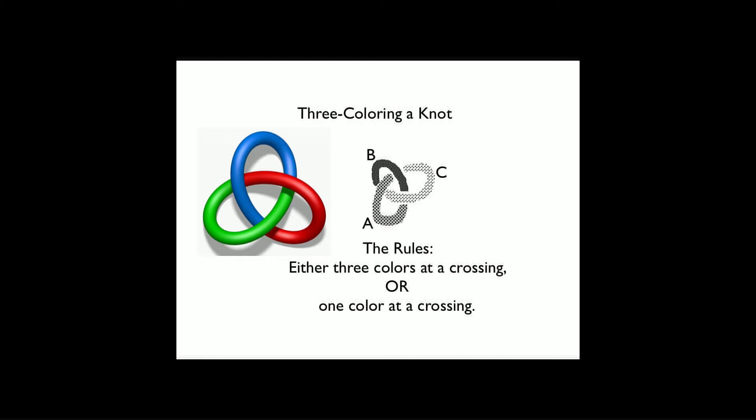A little theory: you can three-color a trefoil knot like this one you see. Some knots can be three-colored. The entire arc from under to under is colored with one color—in this case red, green, blue. Then you realize that if you move this knot around once you've colored it, you can continue to color the resulting new versions of the same knot. The rules being that you either will see three colors at a crossing or one.